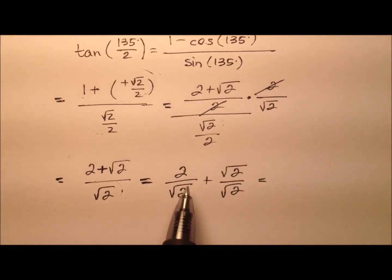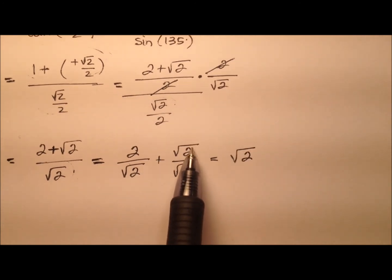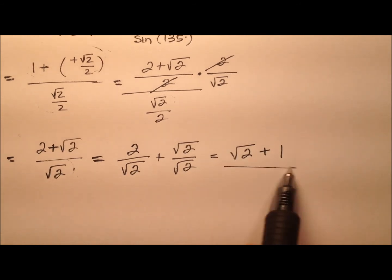Okay, so 2 divided by the square root of 2. Well, that's just going to be the square root of 2. And then of course, the square root of 2 divided by the square root of 2 will be 1. So it looks like we have the square root of 2 plus 1.